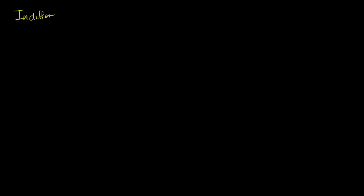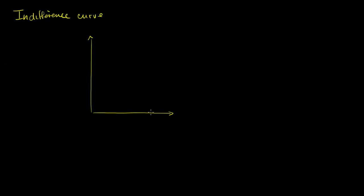In this video, we're going to explore the idea of an indifference curve. What it is is it describes all of the points, all of the combinations of things to which I am indifferent. In the past, we've thought about maximizing total utility. Now we're going to talk about all of the combinations that essentially give us the same total utility. So let's draw a graph that tells us all of the different combinations of two goods to which we are indifferent.